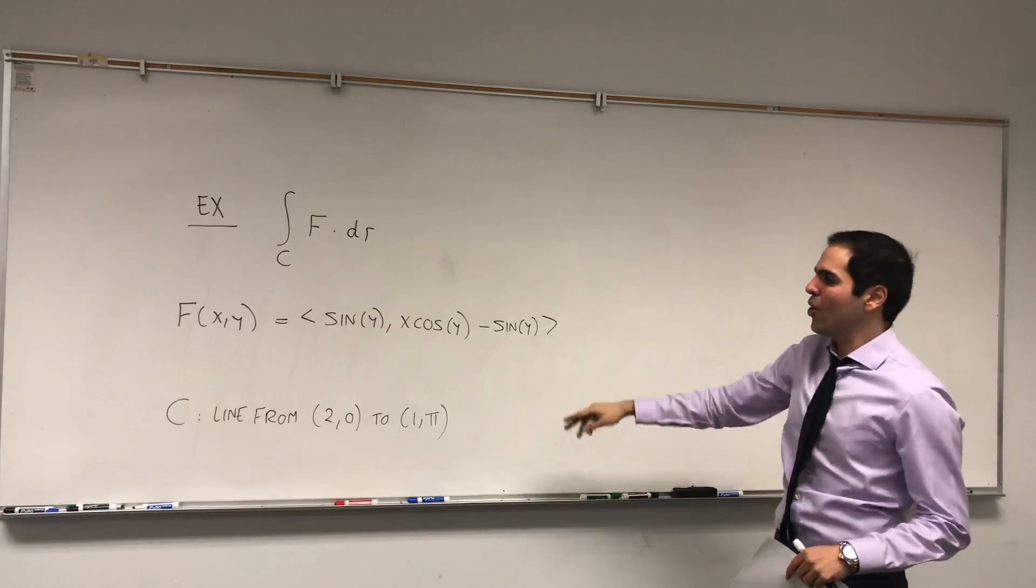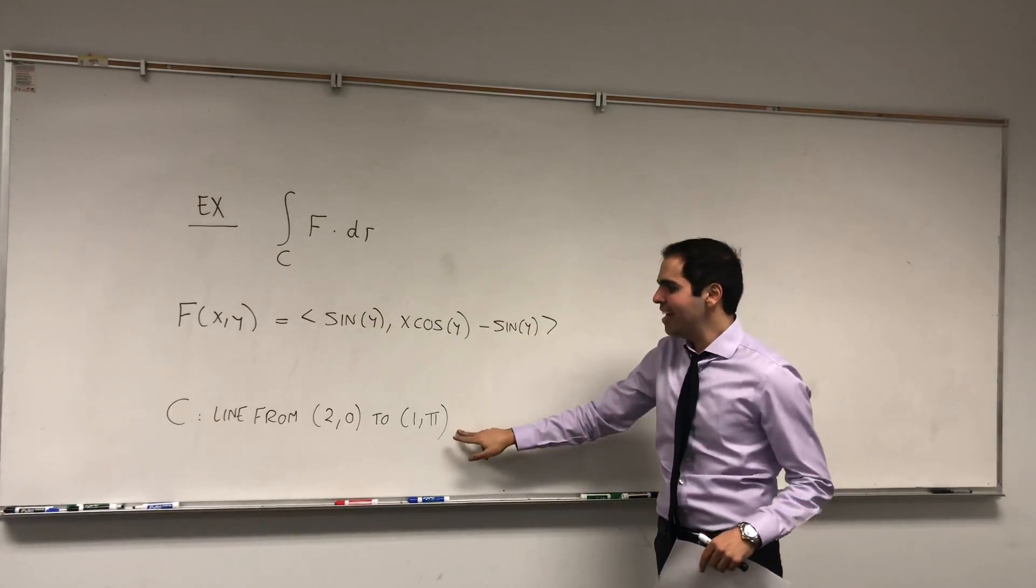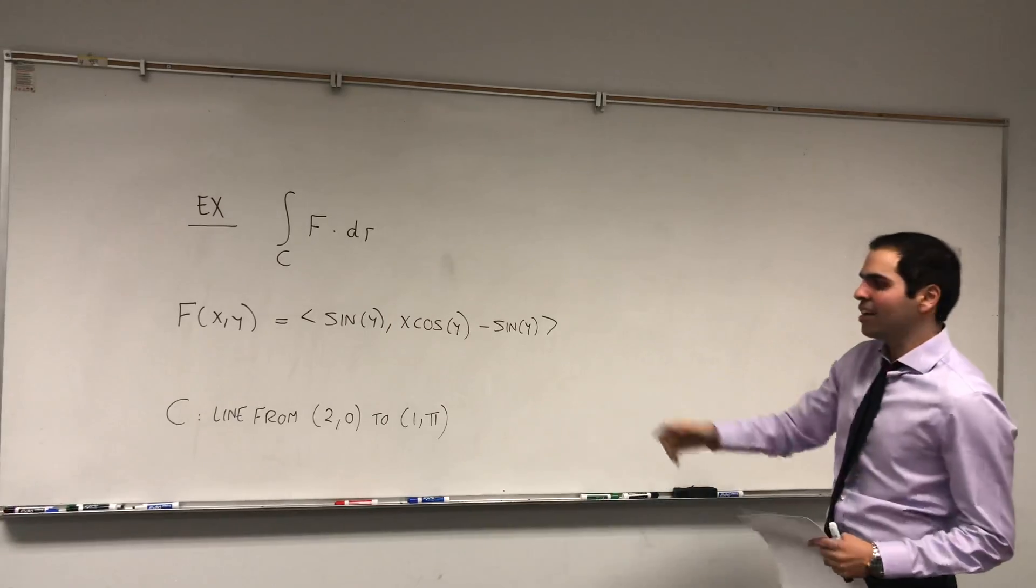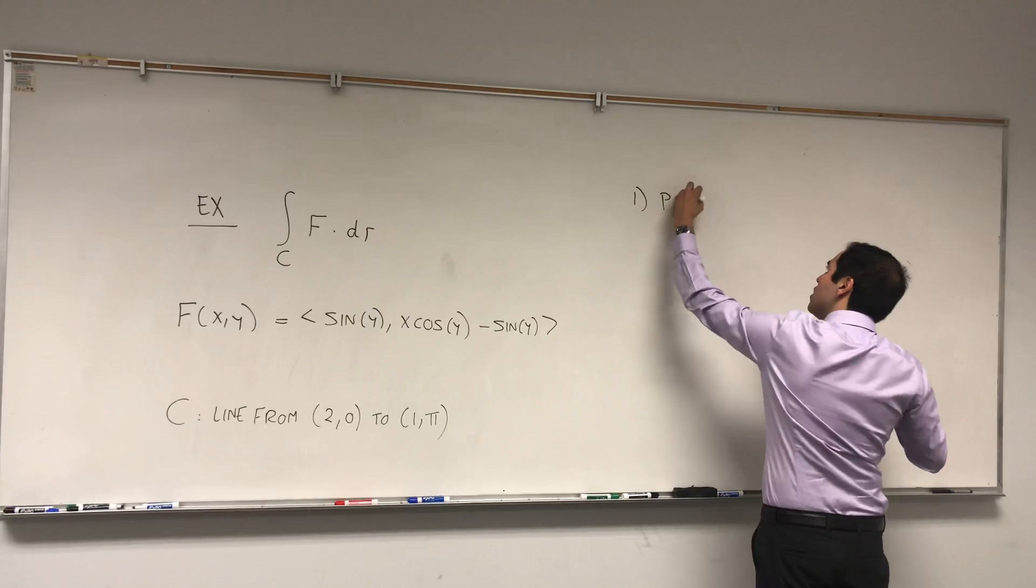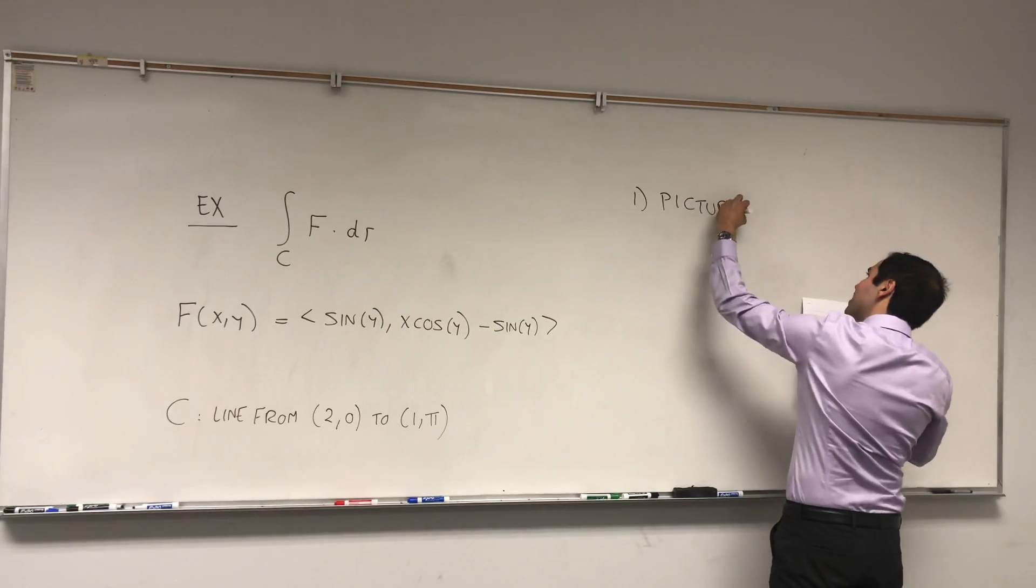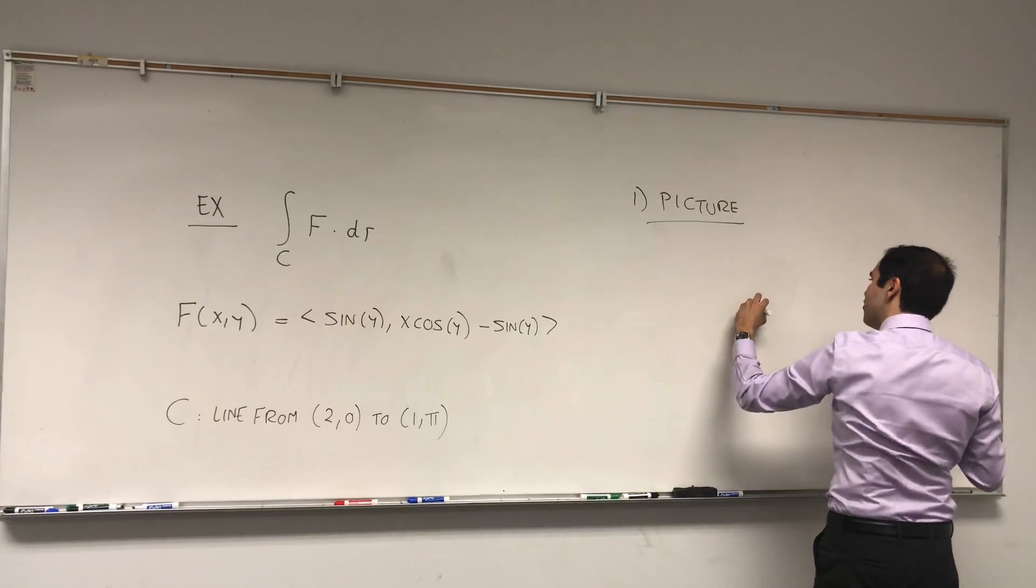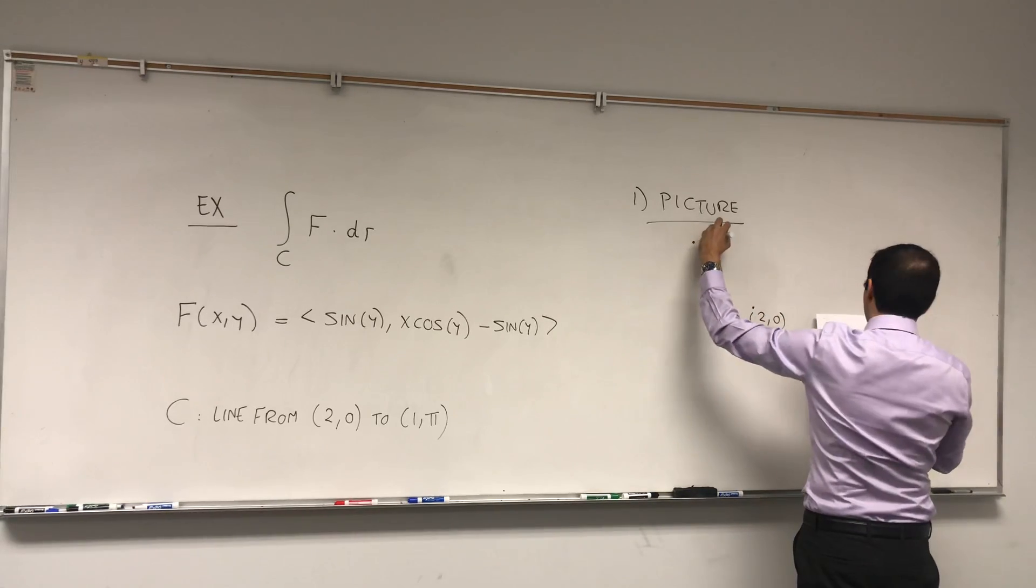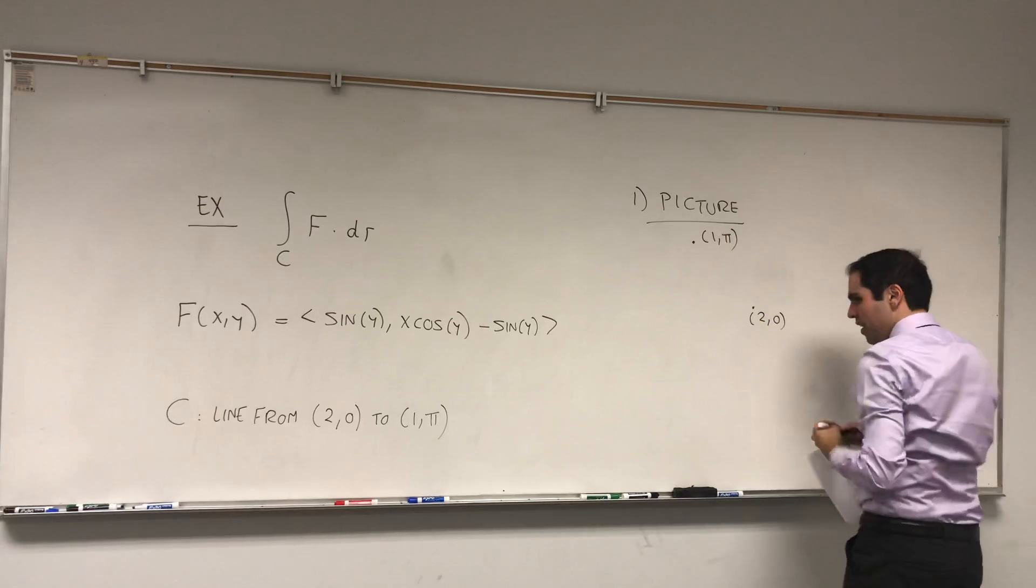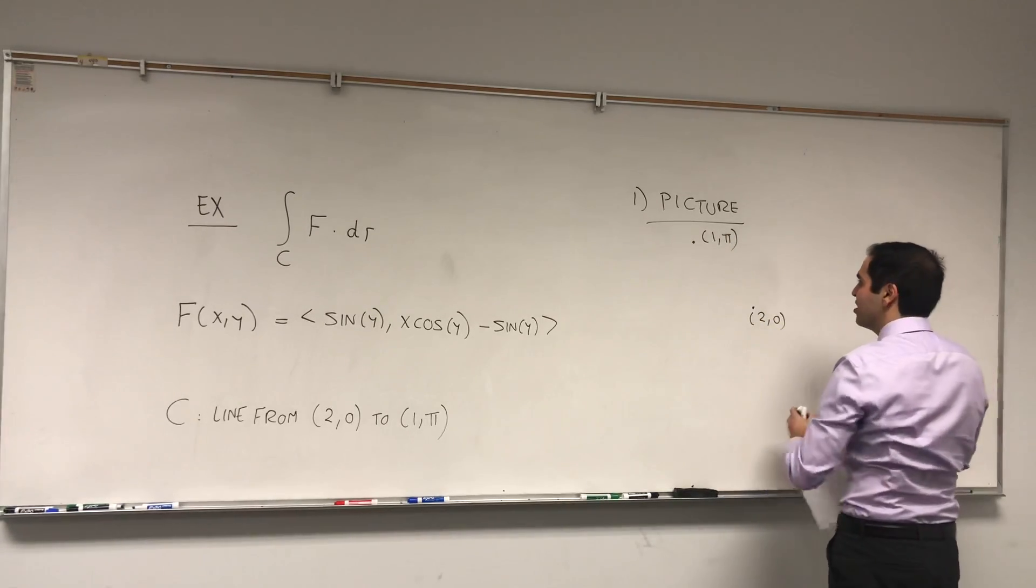So let's do ∫F·dr where F is this one, and C is just a line connecting two points. The way we do this, first of all, let's draw a quick picture. We have the point (2,0) and the point (1,π), and C is just a line connecting the two.